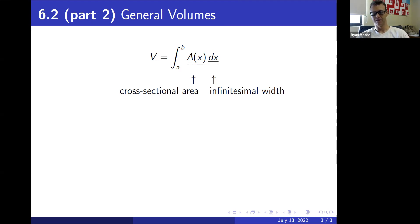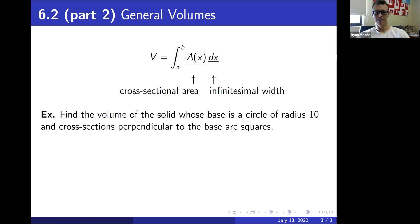With that in mind let's just jump right into it. There's no other theory, there's no other formulas, we're just going to see a couple of examples. First one: find the volume of the solid whose base is a circle of radius 10 and cross sections perpendicular to the base are squares.